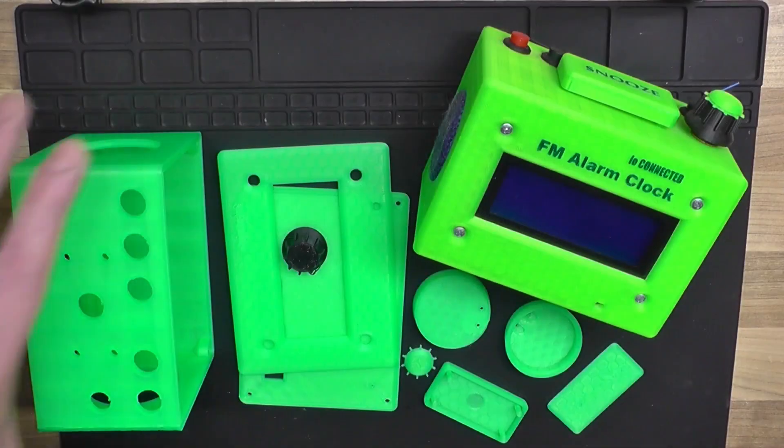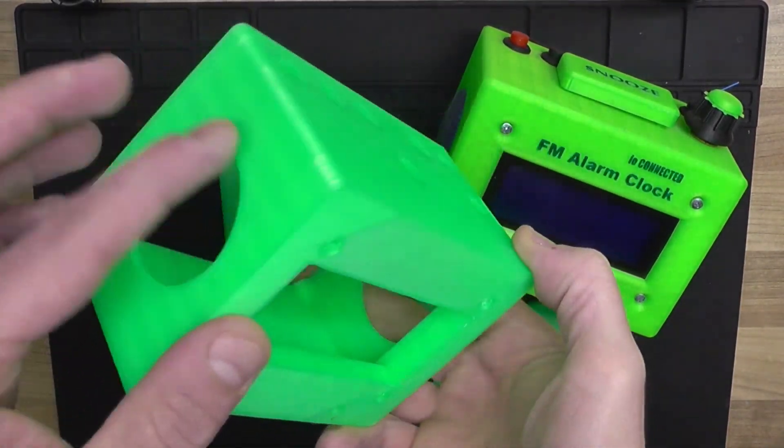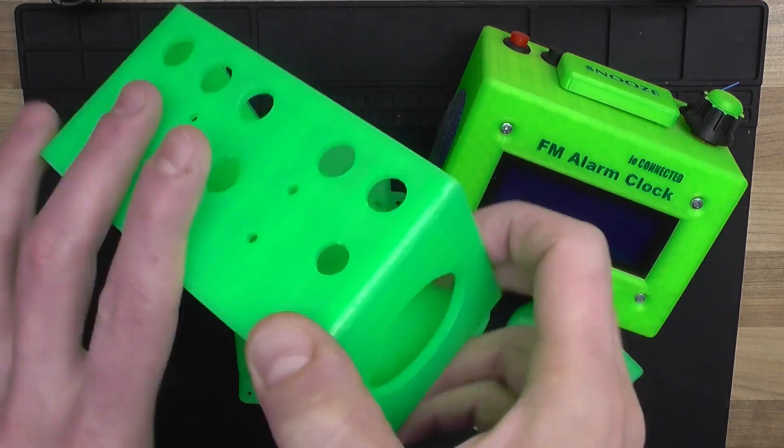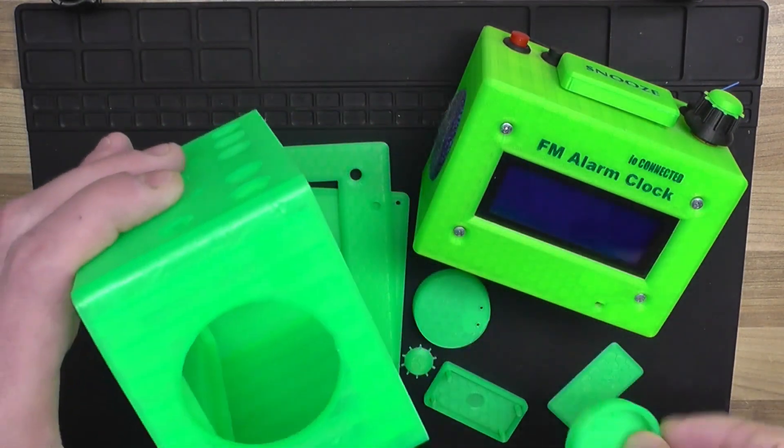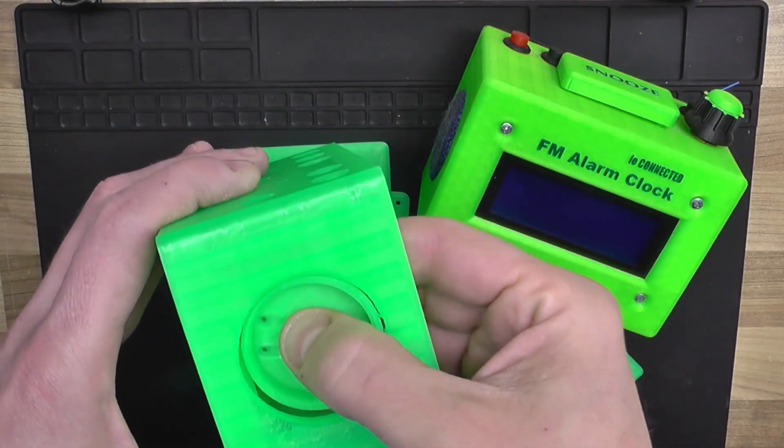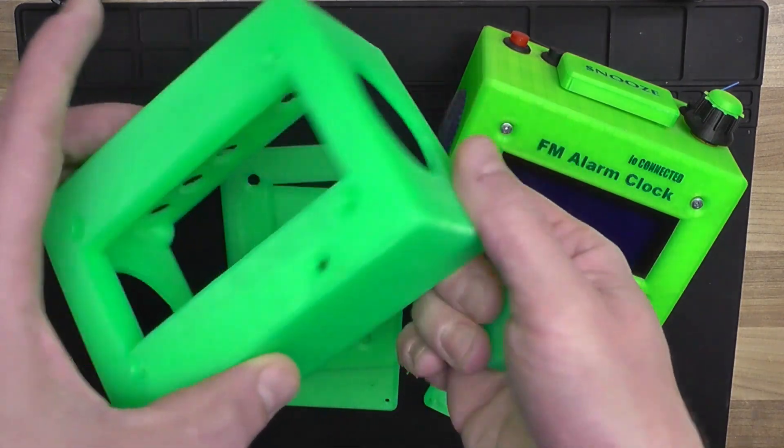So after printing all the parts for the case, you can go ahead and start the assembly process. And you can see here I've printed the second case for the alarm clock, just to be able to show you how it all looks and to give you some pointers with the assembling process.